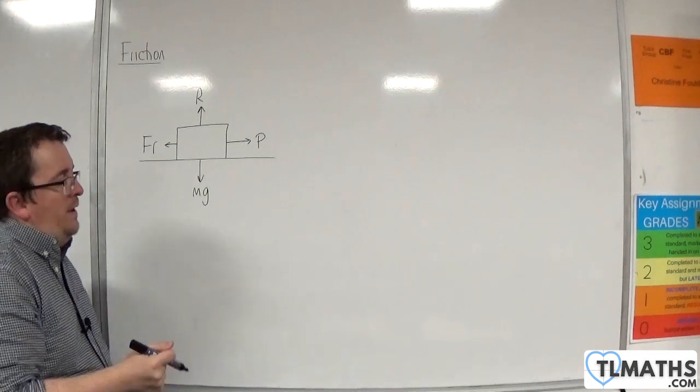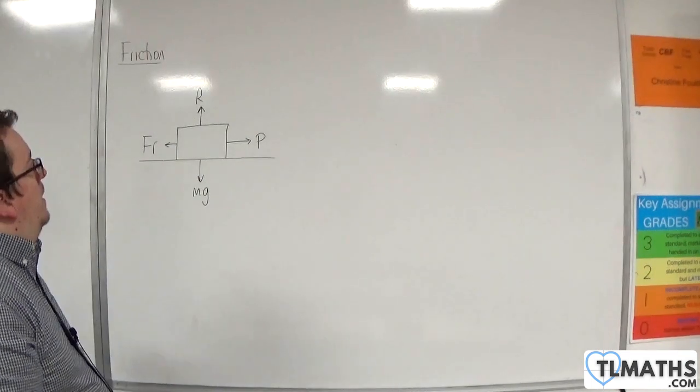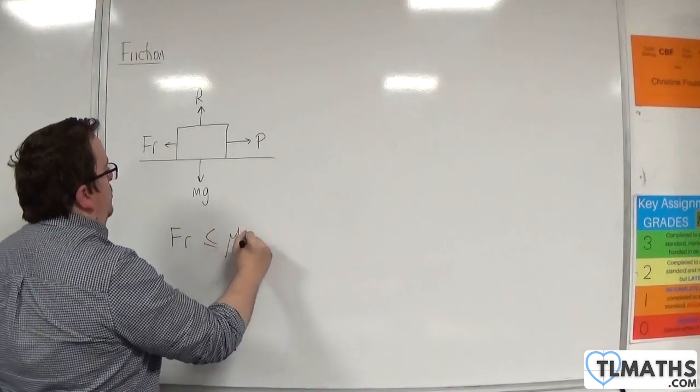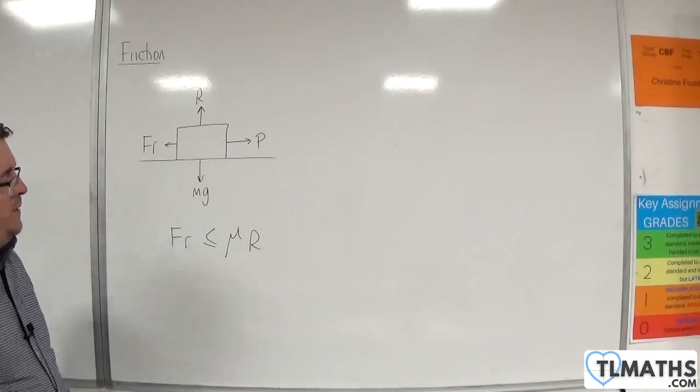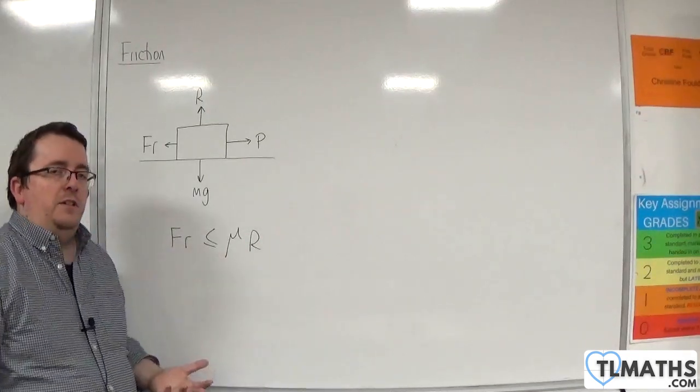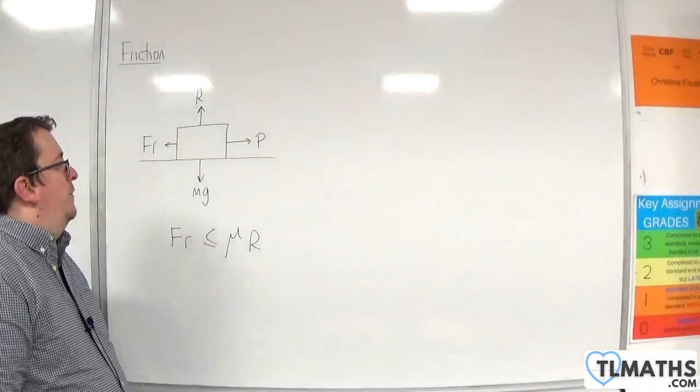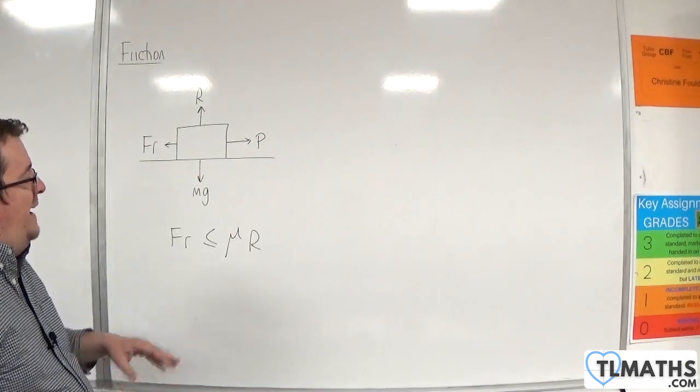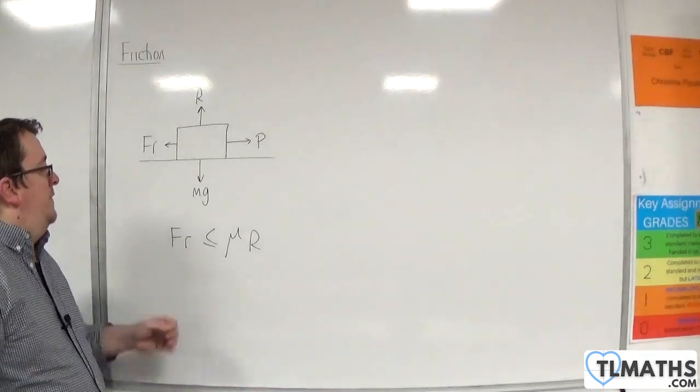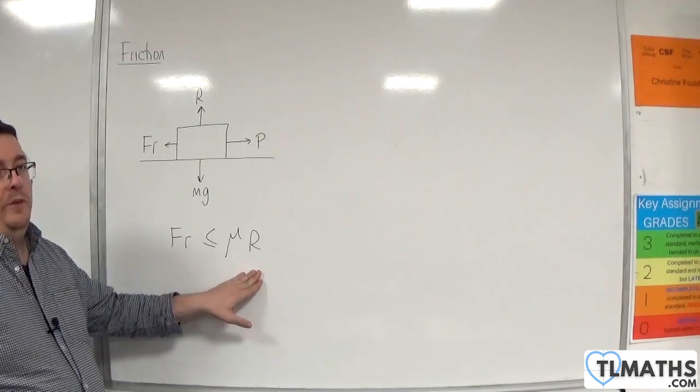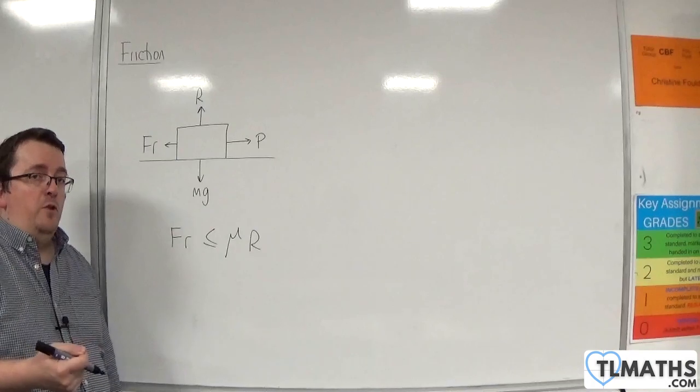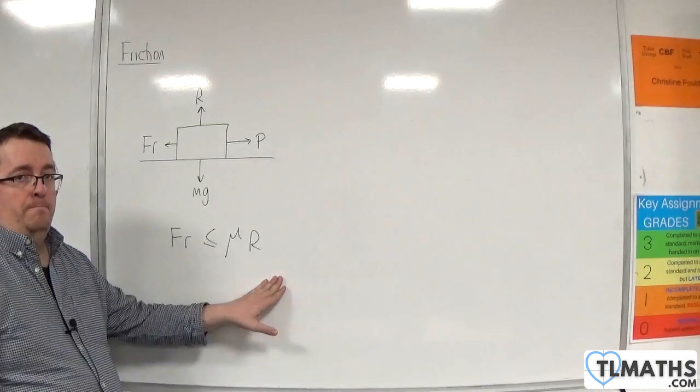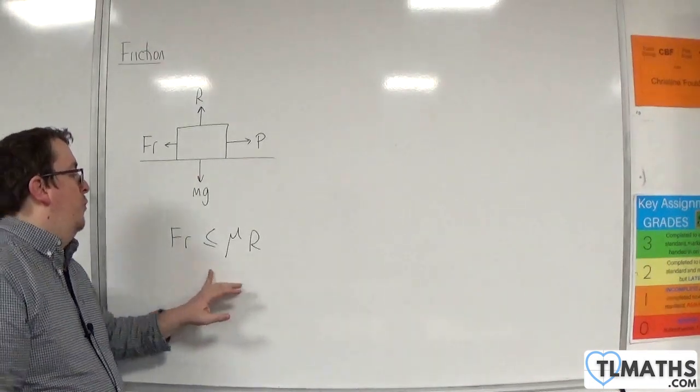Now, we have a formula for friction with R, and that is that the friction is less than or equal to mu times R. If the particle or the block on the rough ground is not moving and it's not on the point of moving, then the friction will be less than mu times R. If it is on the point of moving, or if it is moving, then friction is equal to mu times R.